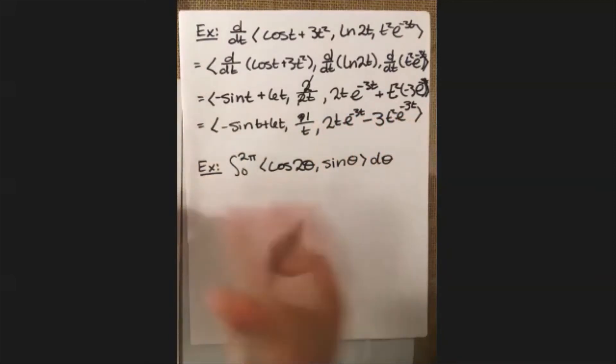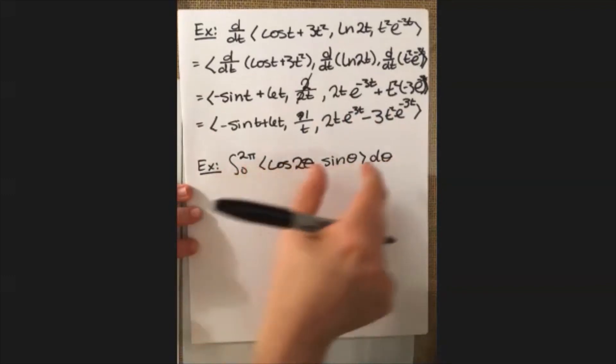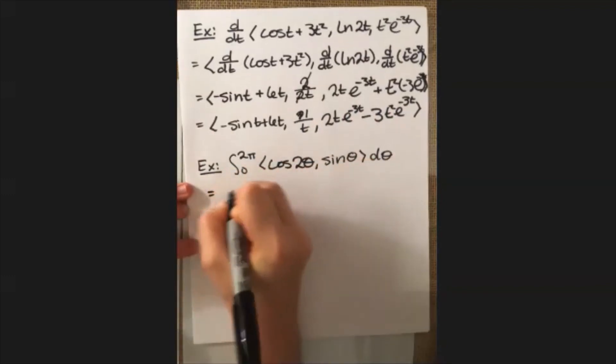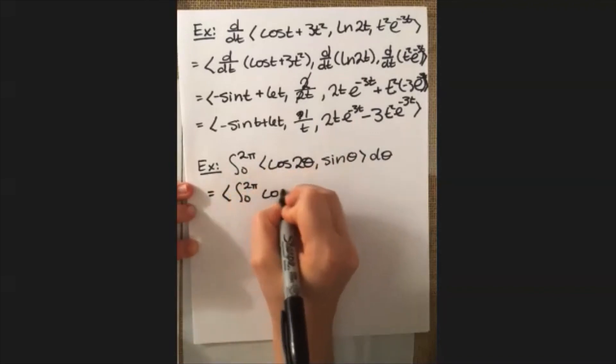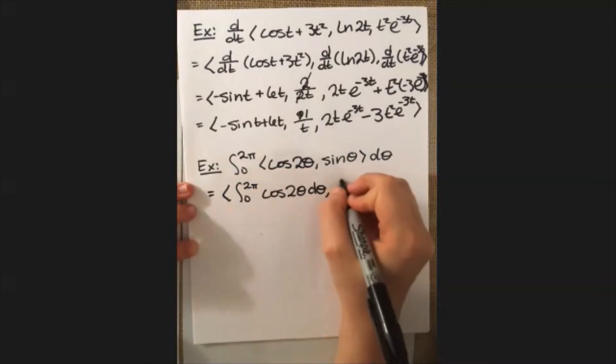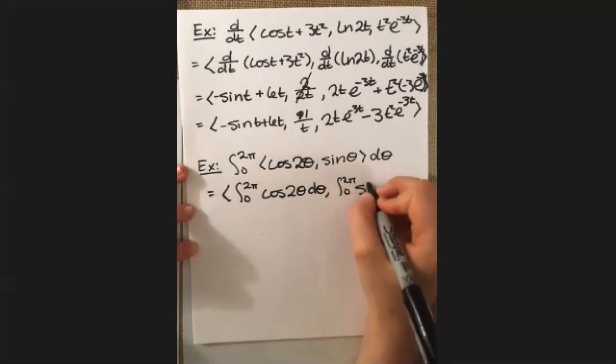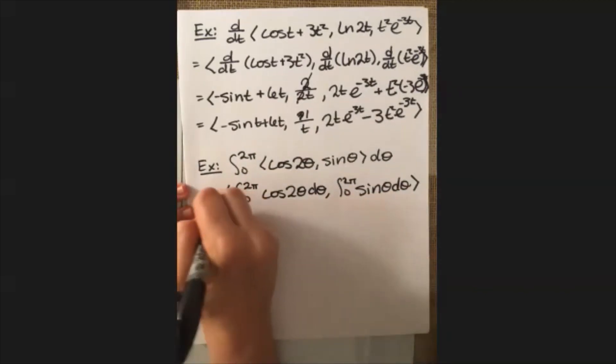So for this one, again, component wise, so I'll just take each one of these, this integral and then the d theta and apply it to each one of these pieces. So this is what I get out of here. So I take the integral, put it in both components, and then all I got to do is evaluate each one of these integrals.